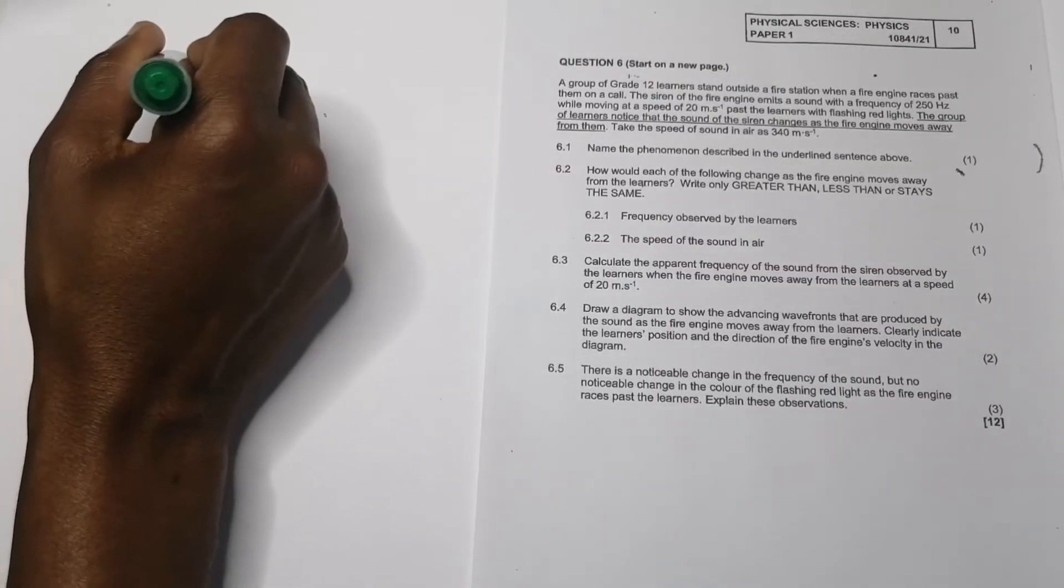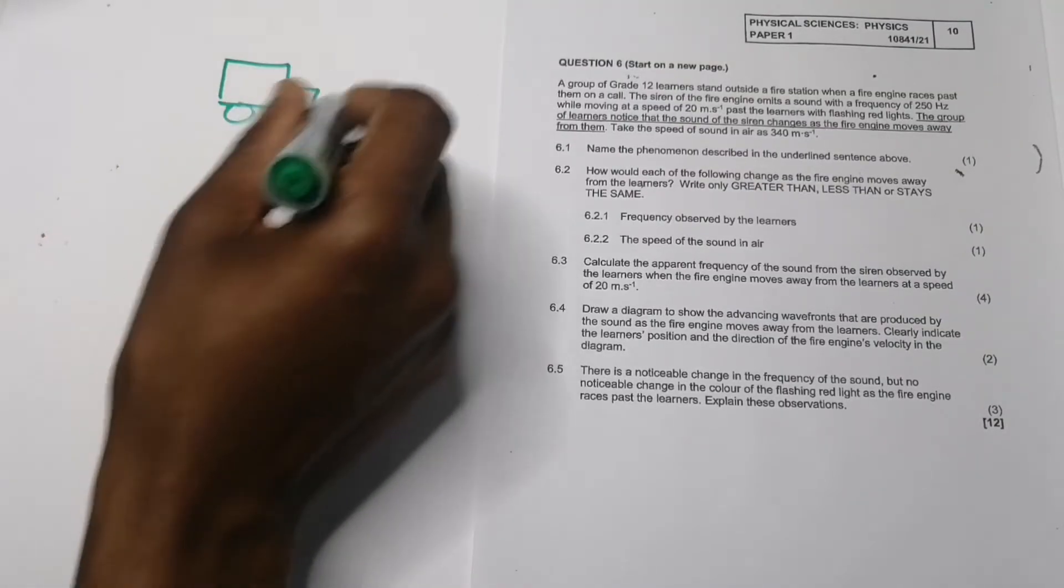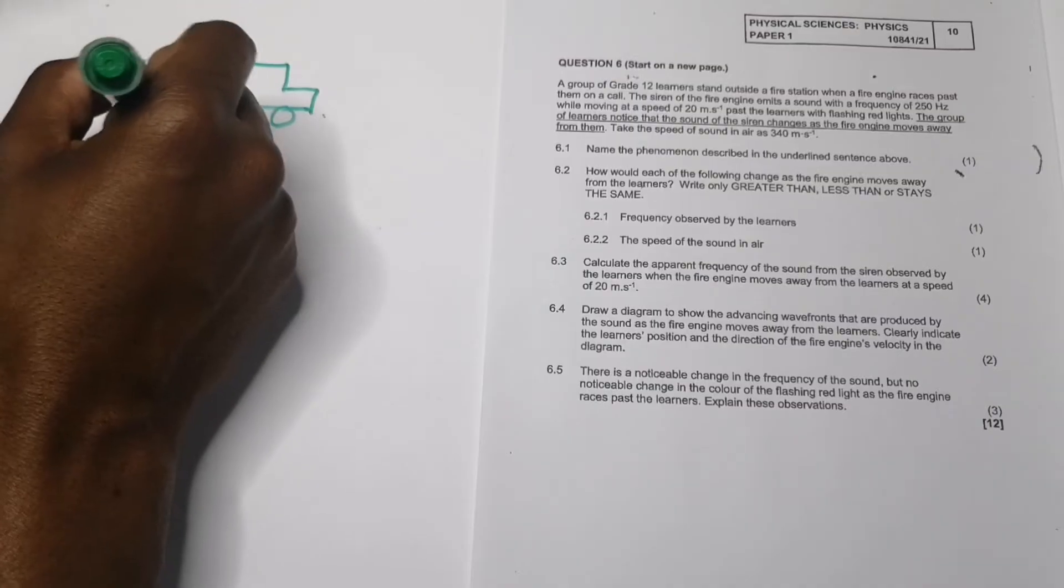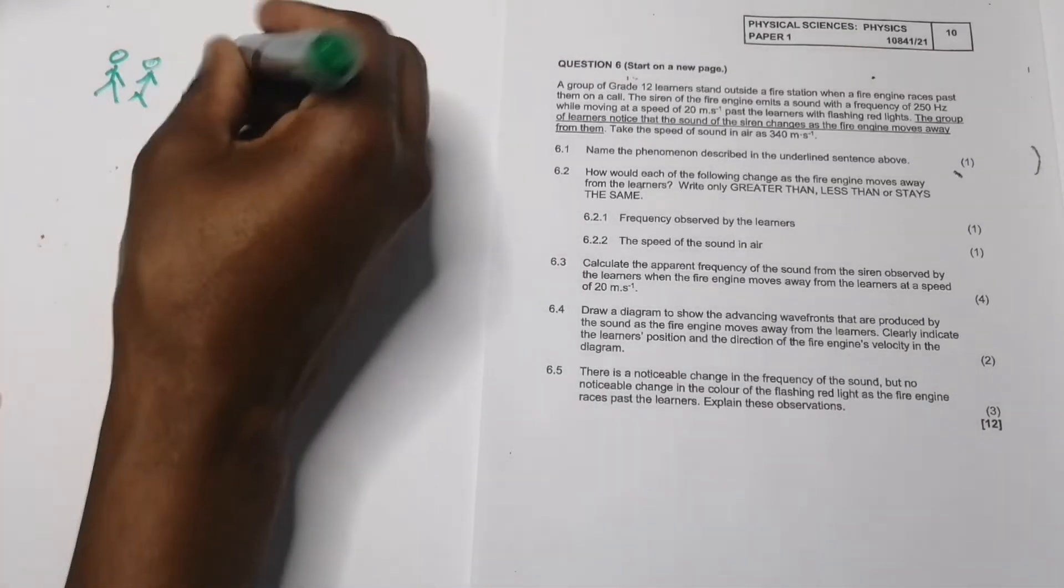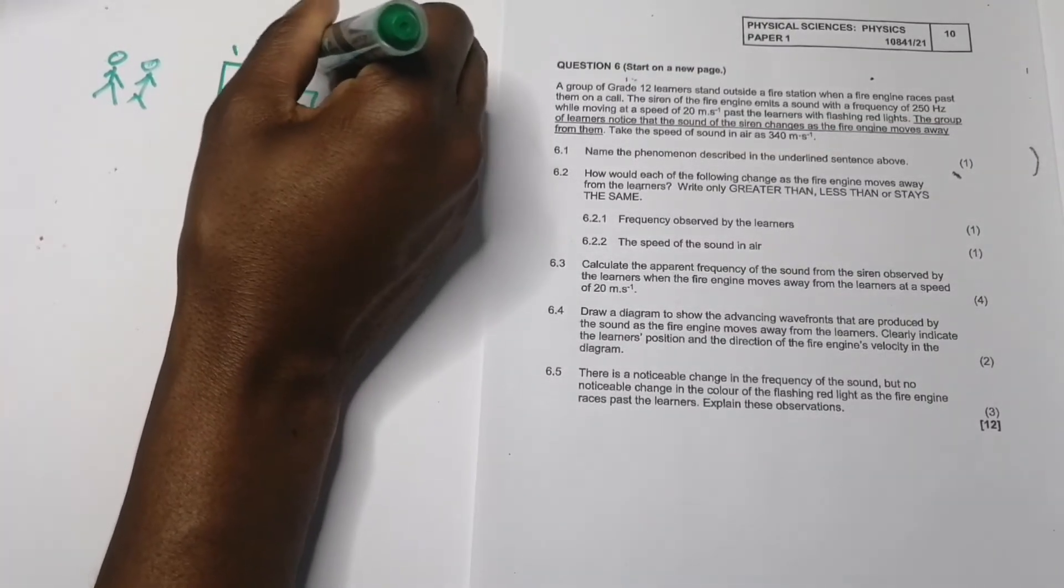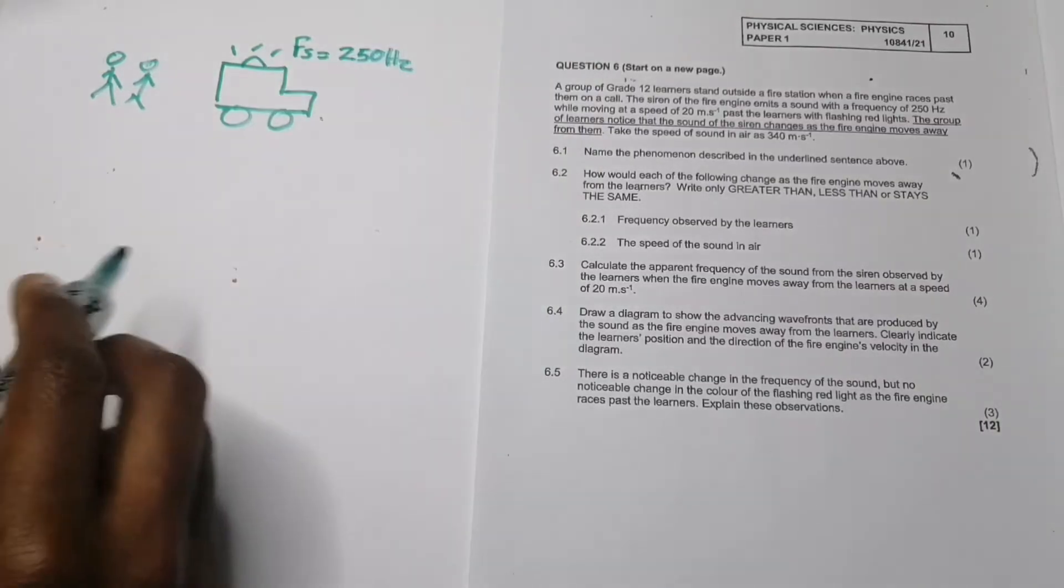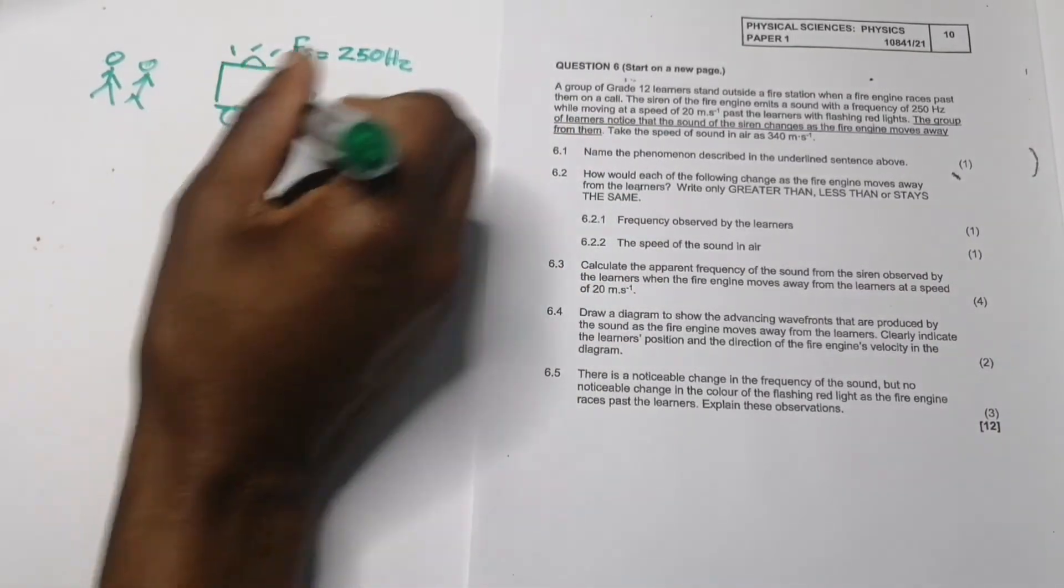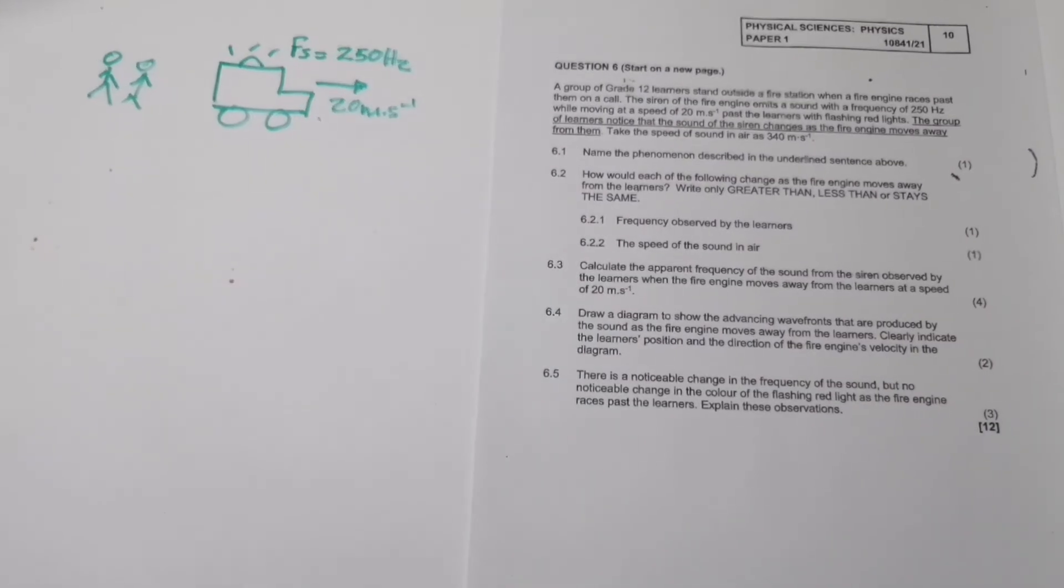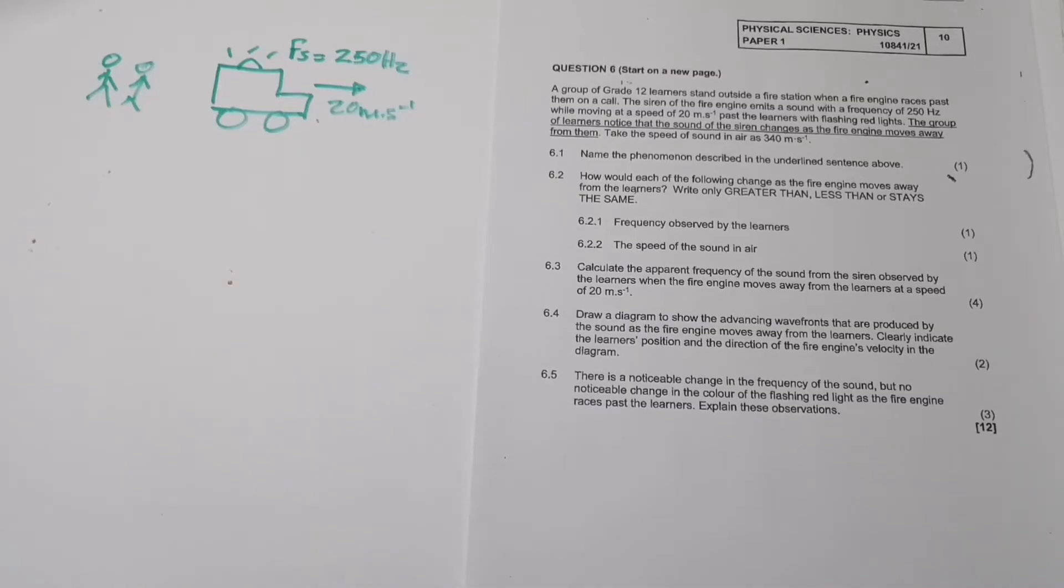I'm going to translate that statement into a drawing - I find it easier to do that. So here's a fire engine, it's racing past the learners. The fire engine is emitting a frequency of 250 hertz, and it's moving at 20 meters per second. The moment you draw this thing down, it makes things much easier.